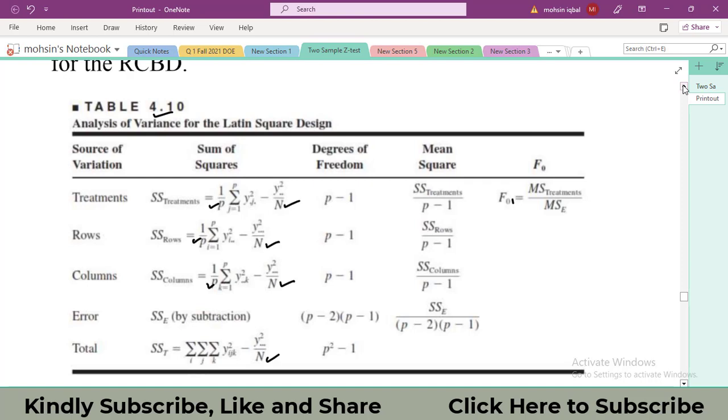After that, go for y_ijk whole square. So I suggest you people to first of all calculate the total SST (sum of squares total). In order to calculate it, take the square of each individual value, then sum all of the individual squared values. You will get this term.